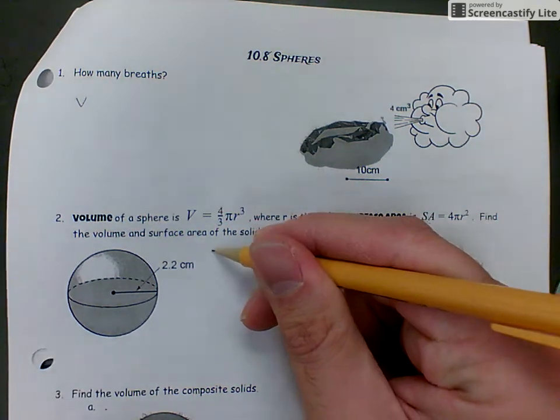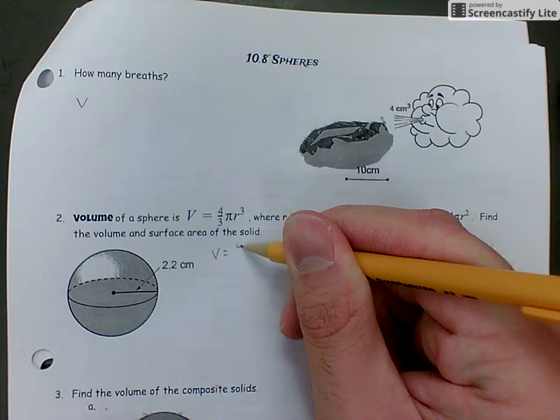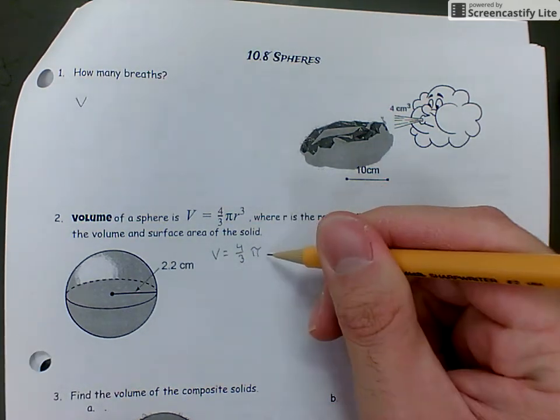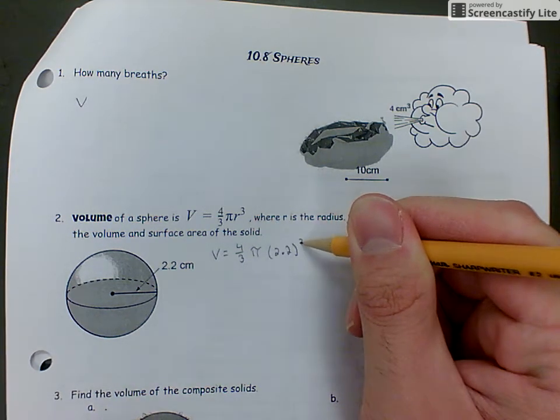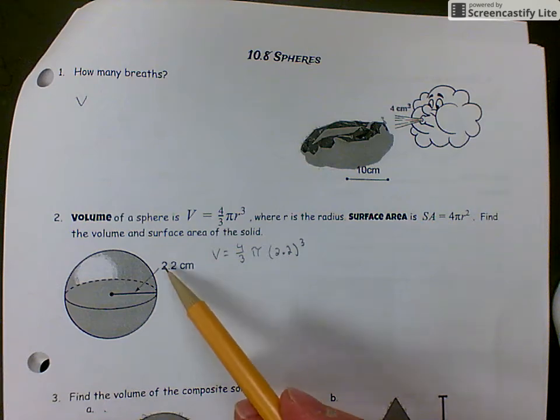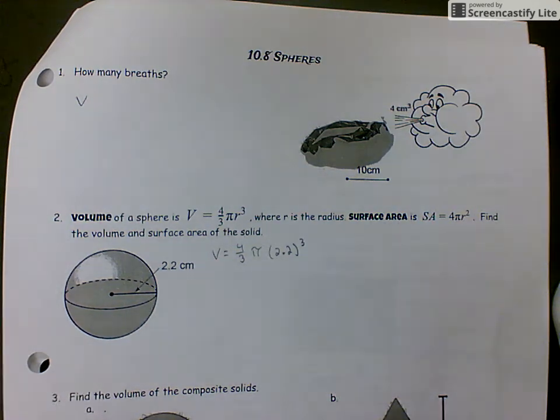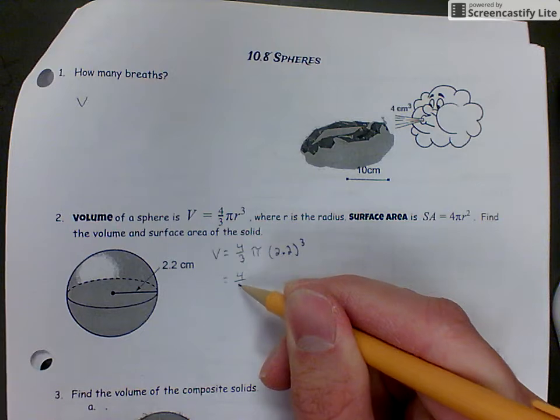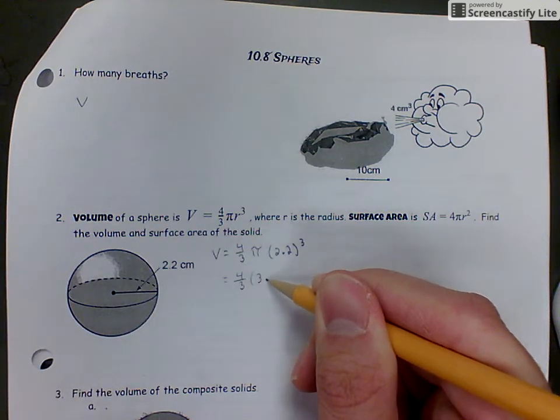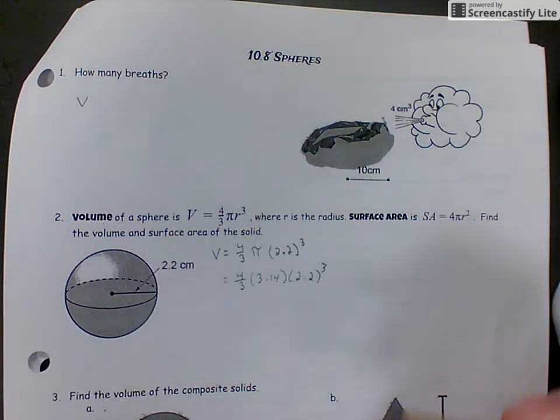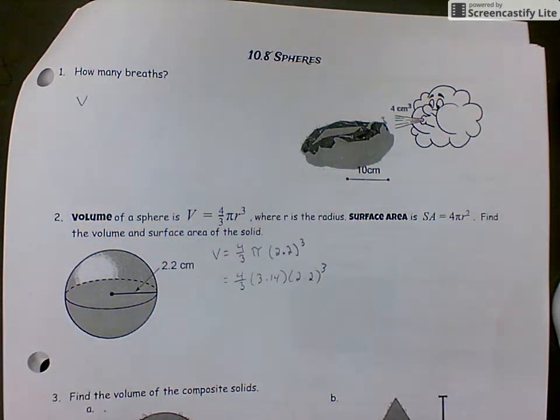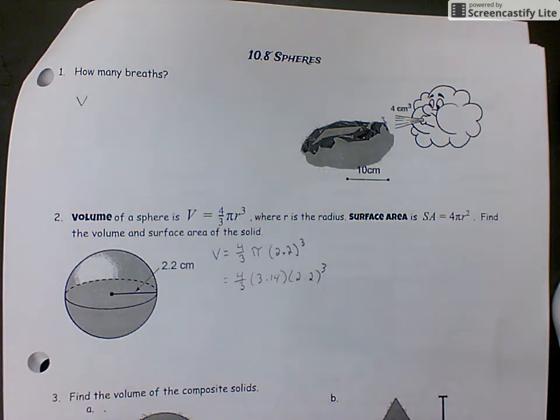Let's start with volume. Volume equals 4/3πr³ where r is 2.2. I can write this as 4/3 × 3.14 × 2.2³. Order of operations says I have to do the exponent first. 2.2 cubed equals 10.648.